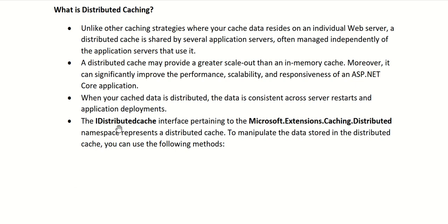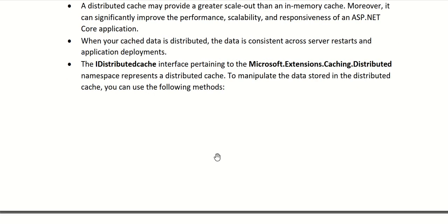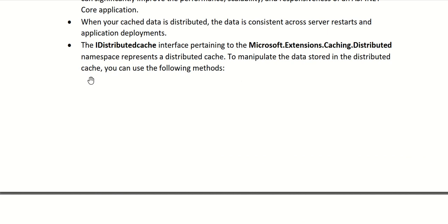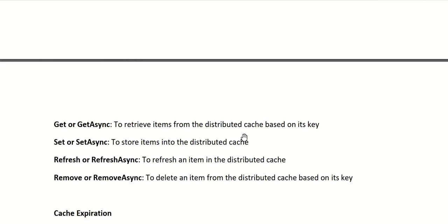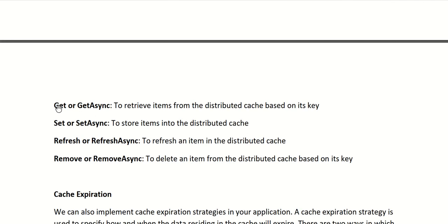The IDistributedCache interface, from the Microsoft.Extensions.Caching.Distributed namespace, represents a distributed cache. To manipulate data stored in a distributed cache we can use the following methods: Get or GetAsync to retrieve items by key, Set or SetAsync to store items, Refresh or RefreshAsync to refresh an item, and Remove or RemoveAsync to delete an item from the distributed cache.